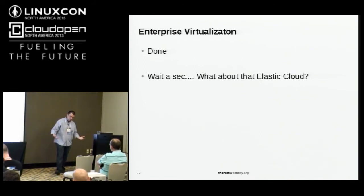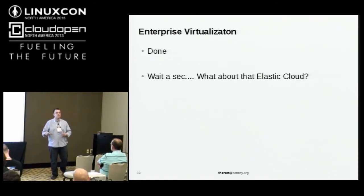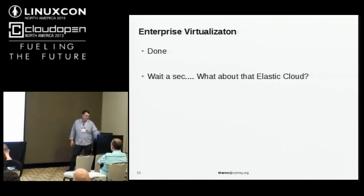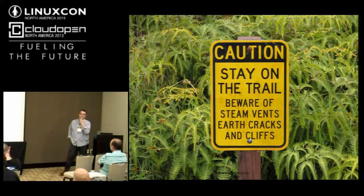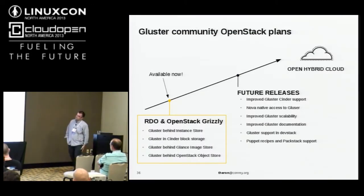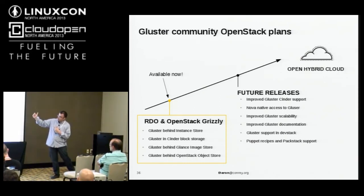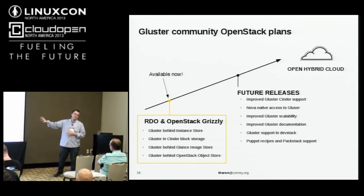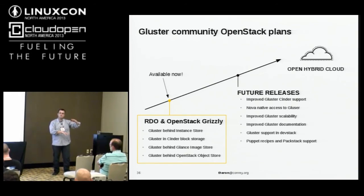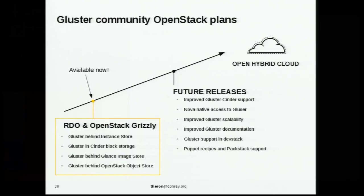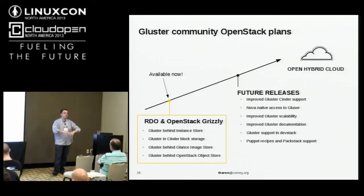Now that we have a converged infrastructure story for legacy virtualization workloads, we realize next generation applications are coming. You can go out and grab RDO — the upstream release very similar to oVirt — for what will be Red Hat Enterprise Linux OpenStack. Same upstream/downstream relationship: Fedora to RHEL, RDO to Red Hat Enterprise Linux OpenStack. From a storage perspective, there are different chunks: object store, instance store, Cinder block storage, and the Glance image component. GlusterFS has different tools to assist in all of those. You can deploy Gluster as your object store for Swift as well — there's a plug-in that allows a Gluster cluster to be your Swift object store, also for Cinder and Glance.